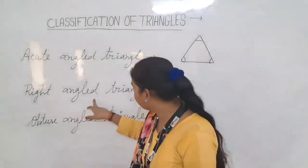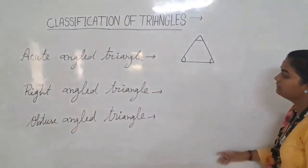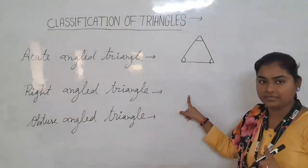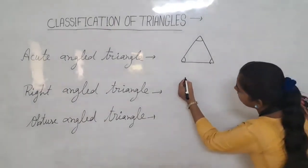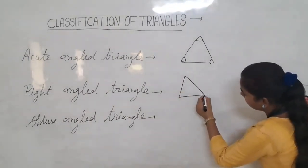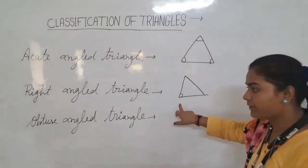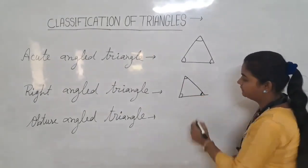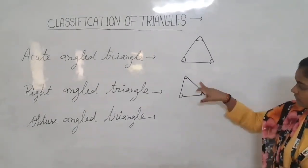Second, we have a right angle triangle. Right means 90 degrees. In a right angle triangle, one angle is 90 degrees — it is a perpendicular line — and the other two angles are acute angles, which are less than 90 degrees.